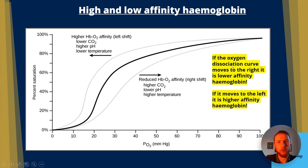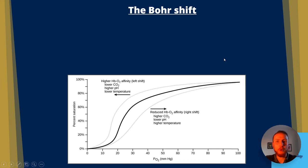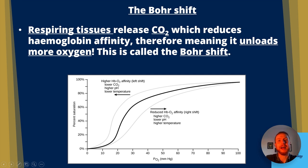We call the rightward shift the Bohr effect. Respiring tissues release CO₂, and CO₂ forms a weak acid — carbonic acid — in solution, which reduces the affinity of haemoglobin. This is a great evolutionary adaptation: it means haemoglobin will unload more oxygen at the respiring tissues where it is needed most. To recap: a curve shifted to the right is low affinity haemoglobin; shifted to the left is high affinity haemoglobin.